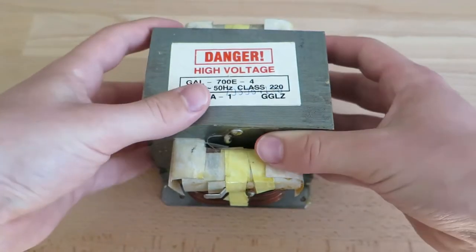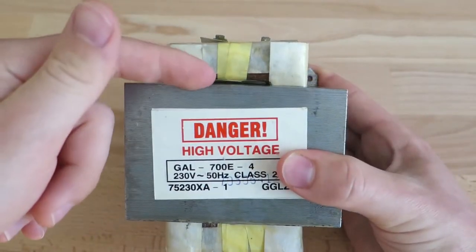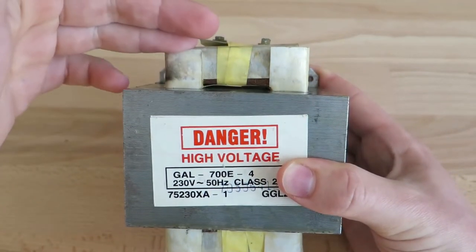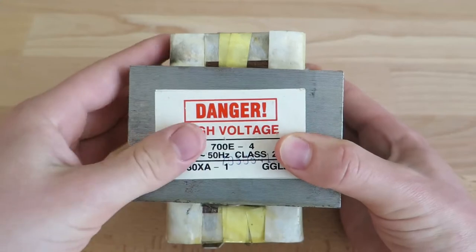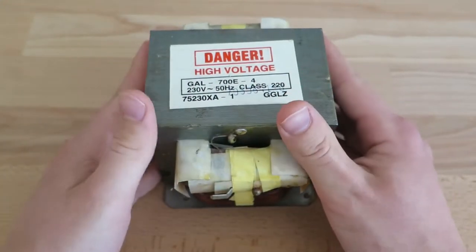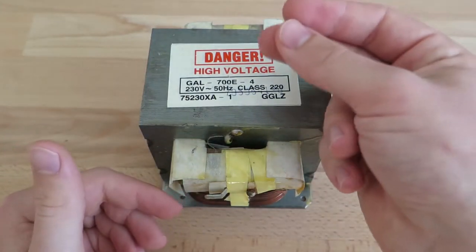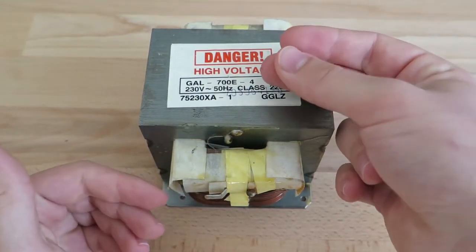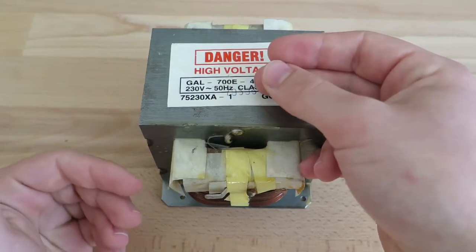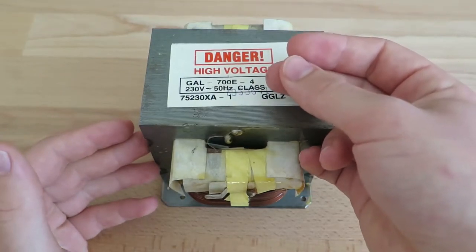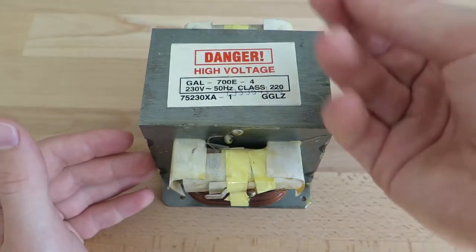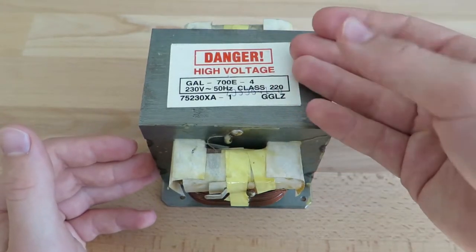Because first of all, the arc can blow away from the core and hit the secondary, which could damage it. But most importantly, if the core is grounded, then the end of your arcing stick is gonna have a high voltage to ground. And if there's any problem with your arcing stick and it somehow conducts, you're gonna get a shock. So don't do that.